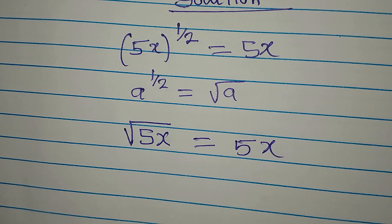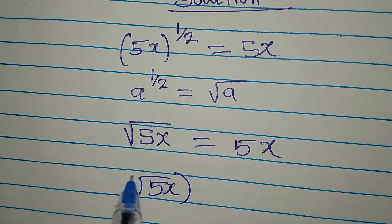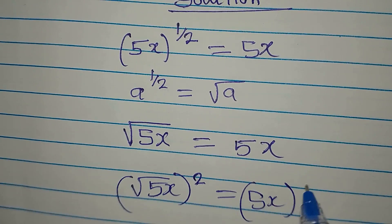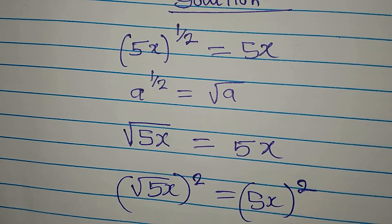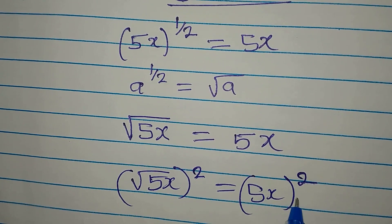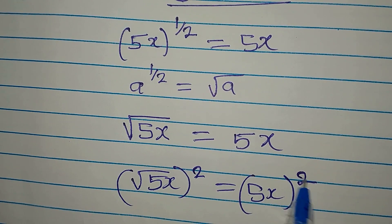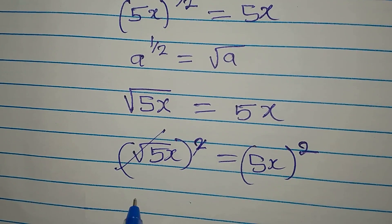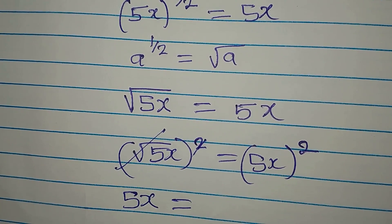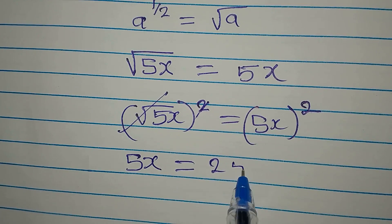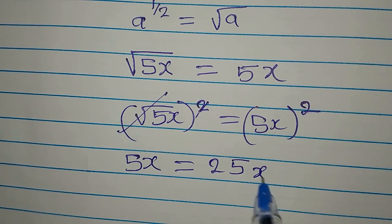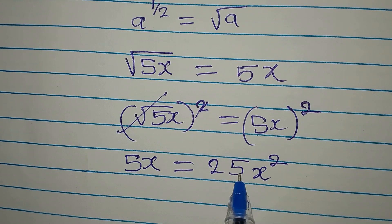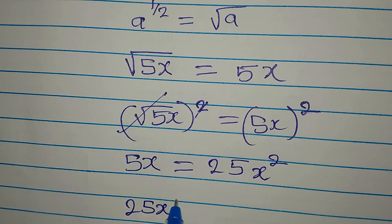How do we remove this square root? To remove the square root of 5x, we square it — and that means we're going to square the other side too. You must put the right side in brackets before squaring; if you do not, the square will apply to x alone. This gives us 5x on the left, and on the other side 5 squared is 25, so we get 25x squared.